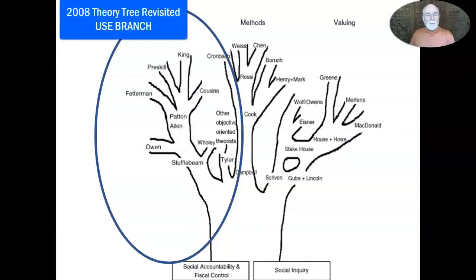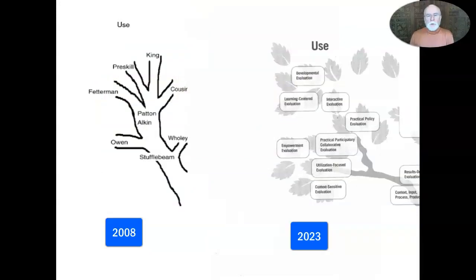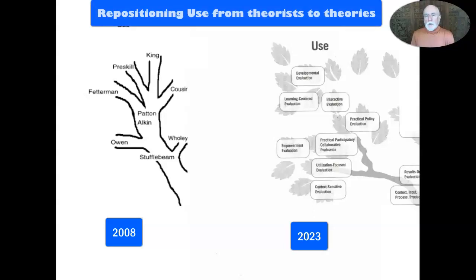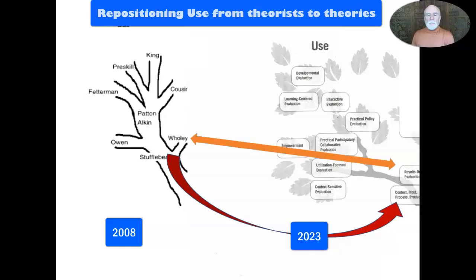This is the 2008 version of the theory tree revisited. When we put the two theory trees side by side - the 2008 version that features theorists and the 2023 version that features theories - we see significant changes.